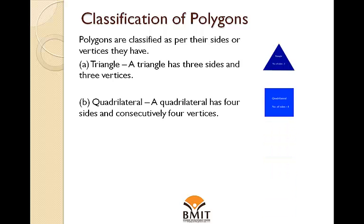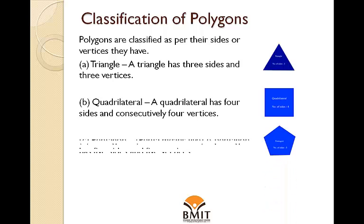A quadrilateral has four sides and consecutively four vertices. Pentagon: penta means five. A pentagon has five sides and five vertices.